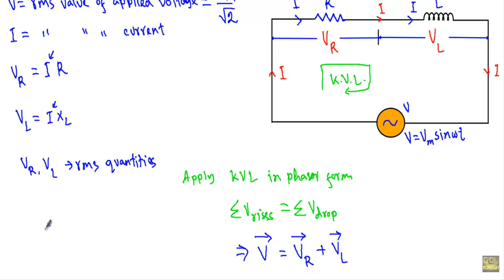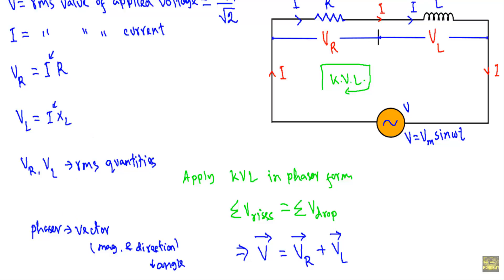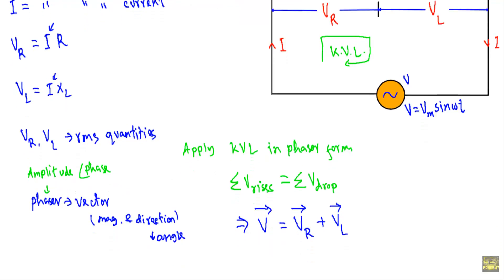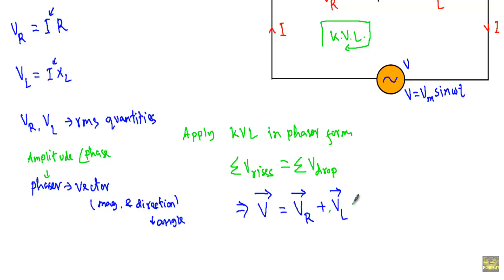I am denoting the phasors with vector signs because a phasor is a kind of vector diagram. To specify a vector, we need its magnitude and direction, where direction is defined by an angle. The phasor of an alternating quantity deals with the amplitude and phase of that quantity. So the phasor diagram is a type of vector diagram. Vr = IR and Vl = IXl, giving us: V = IR (vector) + IXl (vector). This is our equation number 2.